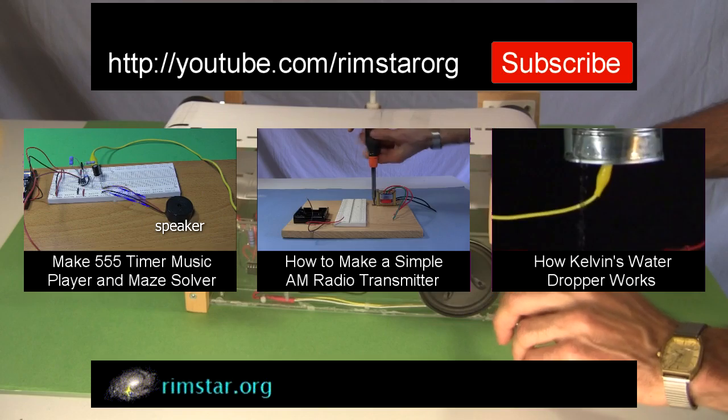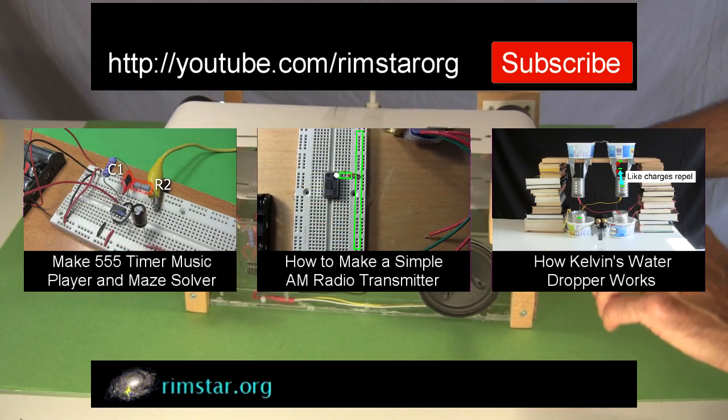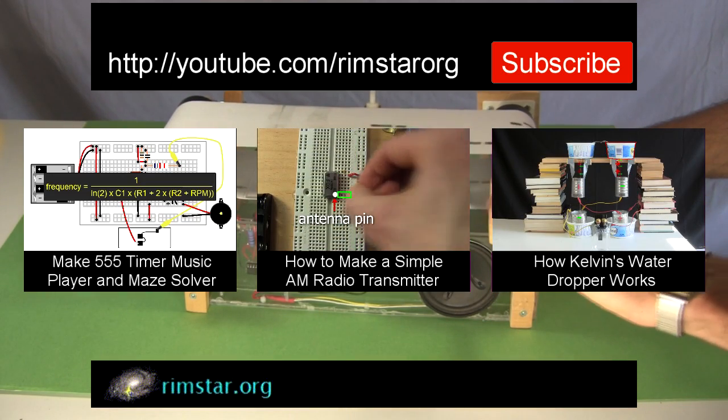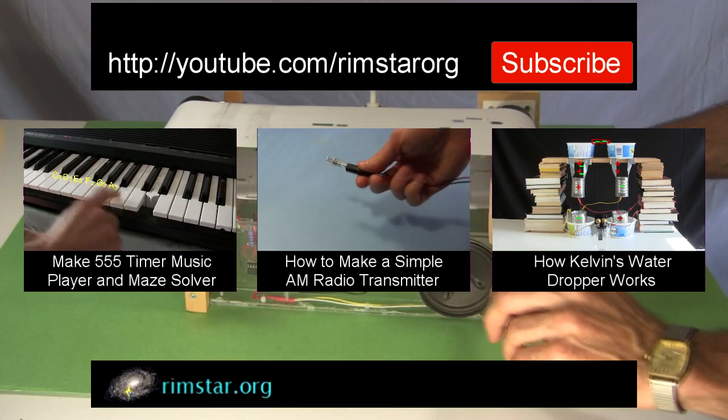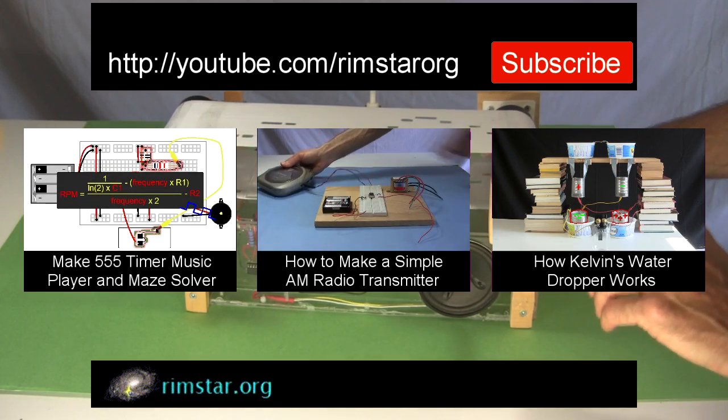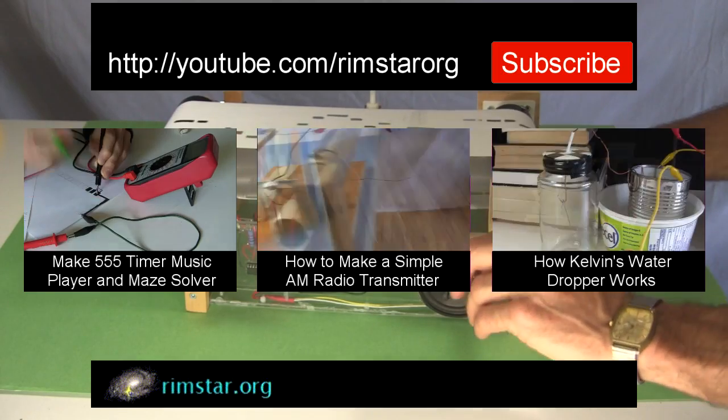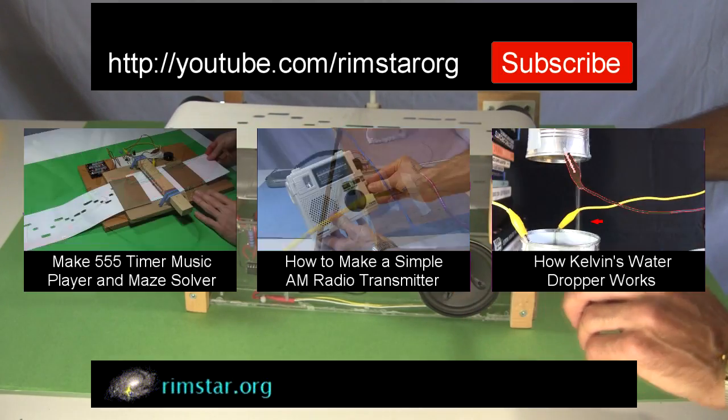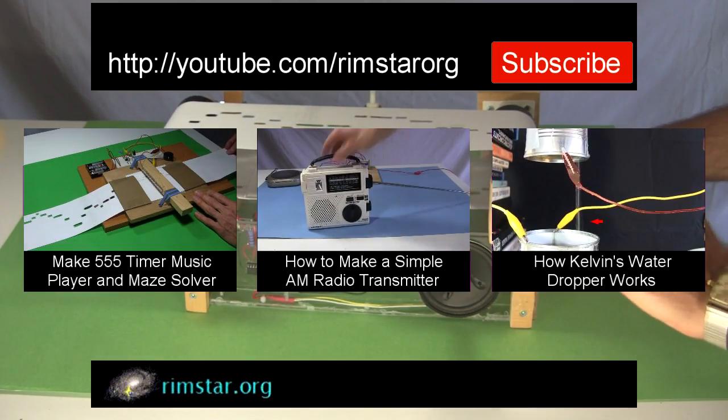Another showing how to make a very simple AM radio transmitter. And one on how to make sparks from streams of falling water, using something called Kelvin's Water Dropper. And don't forget to subscribe if you like these videos. Or give a thumbs up, or leave a question or comment below. See you soon!